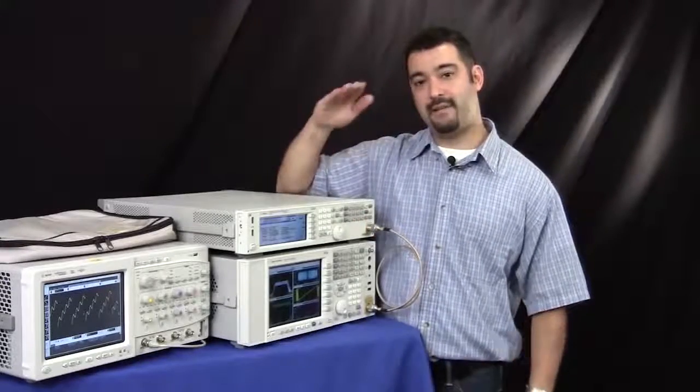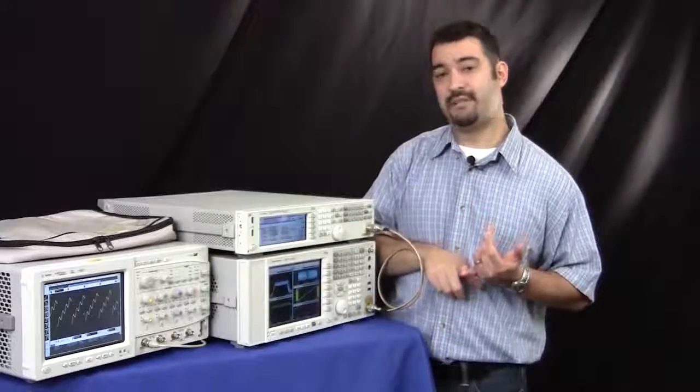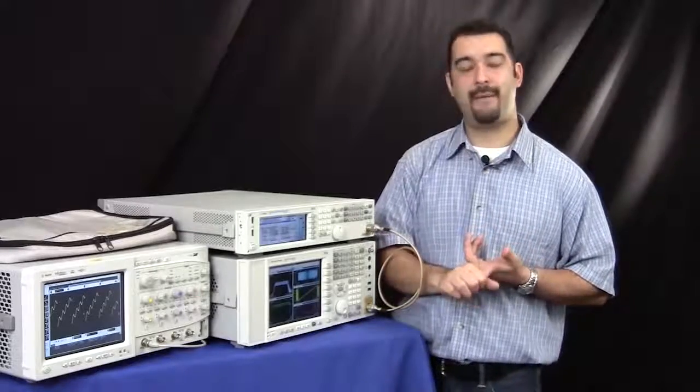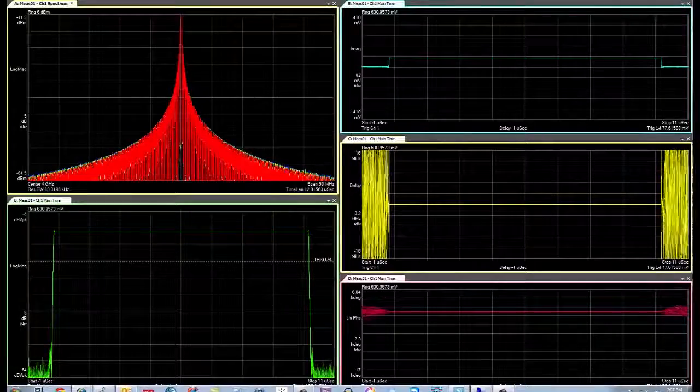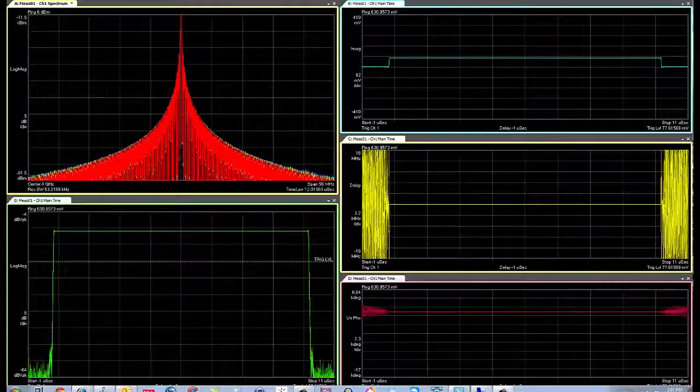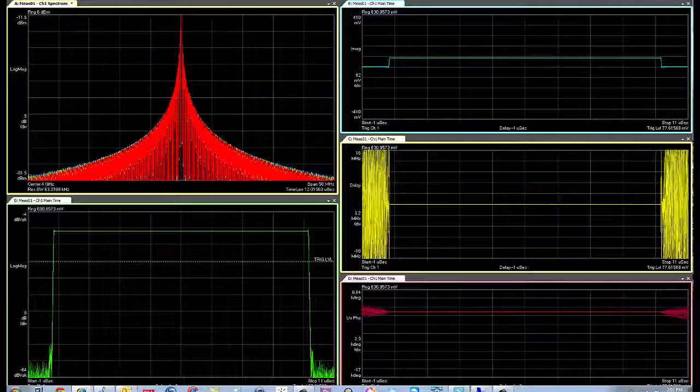And what we're going to do is break that down step-by-step for you. And the first thing we're going to do is start with a basic pulse signal, and then we're going to be adding each one of these complex modulations on top of it. We're first going to start and default the EXG to a 4 GHz signal at 0 dBm. In this case, we have a 10 microsecond pulse width with a 100 microsecond PRI.